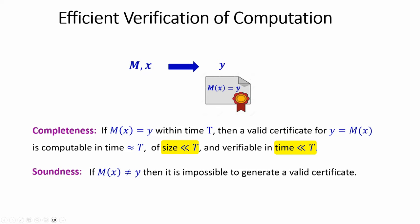How about soundness? Essentially, what we want to make sure is you can't fake it. If Y is not the correct output, you should not be able to generate a valid certificate. Now, usually soundness says it's impossible — there doesn't exist a short proof certifying false computations — but this turns out is too much to hope for. We can hope for something good enough: if Y is not the correct output, then it should be practically impossible to generate a valid certificate.